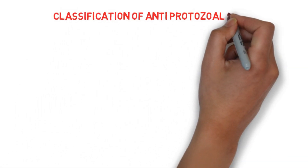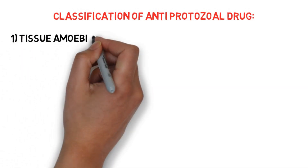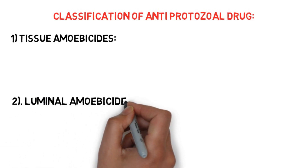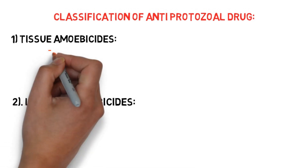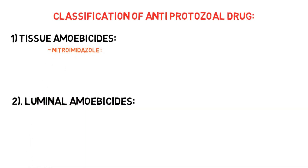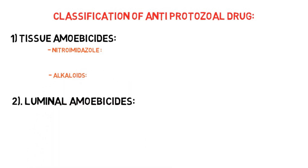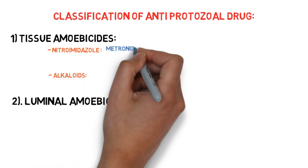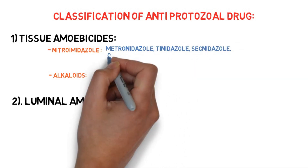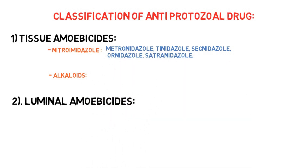Now let's classify anti-protozoal drugs. Anti-protozoal drugs are mainly classified into two types: tissue amoebicides and luminal amoebicides. Tissue amoebicides are further classified into two types: nitroimidazoles and alkaloids. The drugs in nitroimidazoles are metronidazole, tinidazole, secnidazole, ornidazole, and satranidazole.